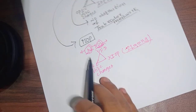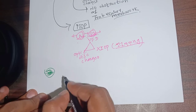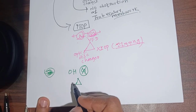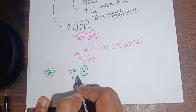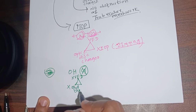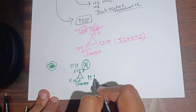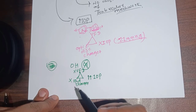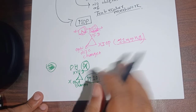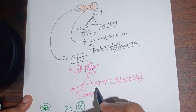The third condition is ocular hypertension. In ocular hypertension, there are no changes in visual field defect and no changes in optic disc, but there is only an increase in intraocular pressure. So we can differentiate: ocular hypertension has only increased IOP, while normal tension glaucoma has no increase in intraocular pressure.